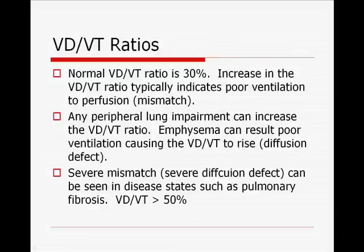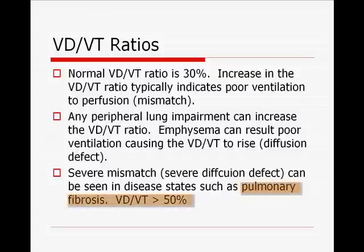VD/VT ratios: we covered the VD/VT ratio formula — the Bohr equation — and normal is around 30% or less. An increased VD/VT ratio typically indicates poor ventilation-to-perfusion mismatch. Any peripheral lung impairment can increase the VD/VT ratio; for example, emphysema can result in poor ventilation causing the ratio to rise, and that's usually a diffusion defect. A severe diffusion defect can be seen in disease states such as pulmonary fibrosis. A VD/VT ratio greater than 50% is usually indicative of a pretty severe defect, with pulmonary fibrosis or severe emphysema as possible underlying causes.